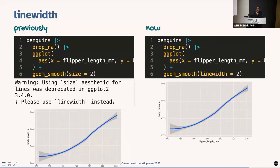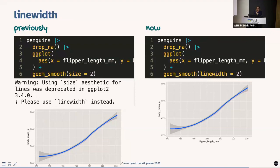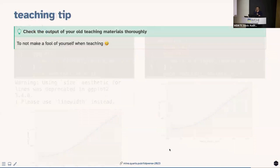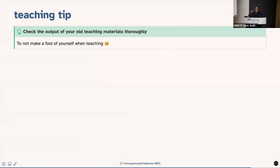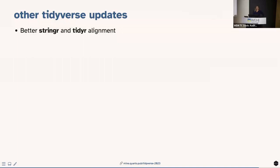One quick ggplot2 update: if you use the 'size' aesthetic for lines to make them thicker, you'll now get a warning saying to use 'linewidth' instead. Check your teaching materials thoroughly — I spent an entire academic year standing in front of slides with that warning displayed, which I'd rather not repeat.